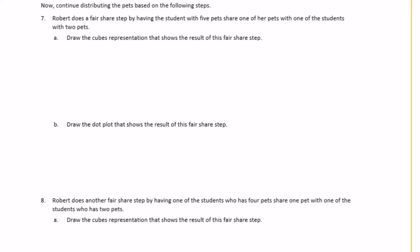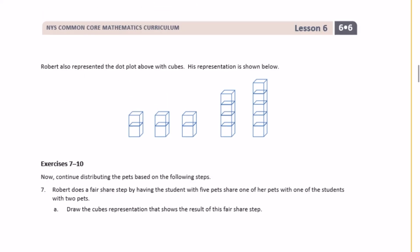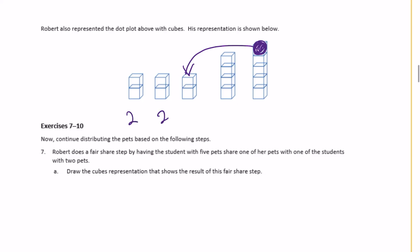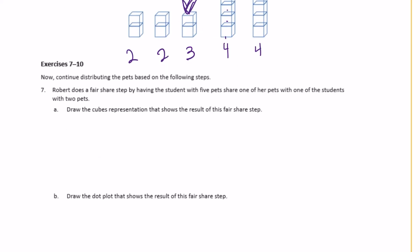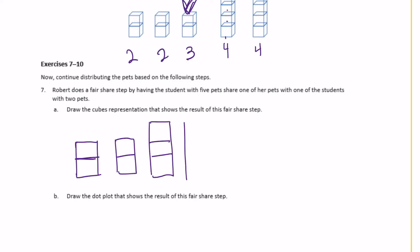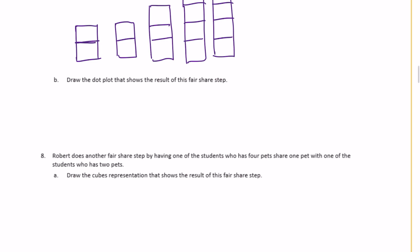Continuing the fair share steps: Robert has the student with 5 pets share one pet with one of the students who has 2 pets. So the student with 5 becomes 4, and one student with 2 becomes 3. Now we have two stacks of 2, one stack of 3, and two stacks of 4. Drawing that cube representation and the corresponding dot plot.